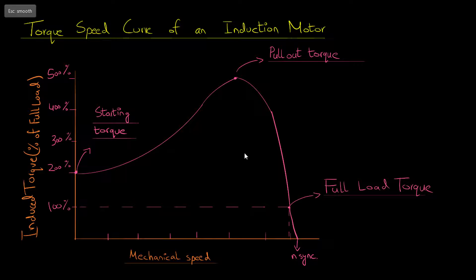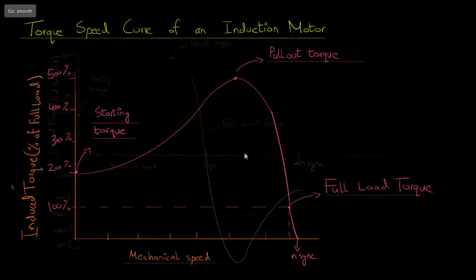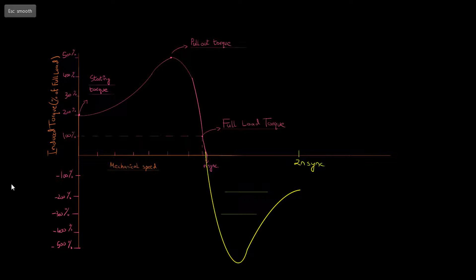Carrying this further, if the motor's speed is increased beyond the synchronous speed, then the machine enters into the generator region and the direction of the induced torque is reversed.